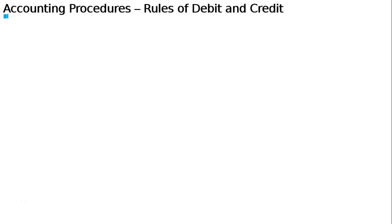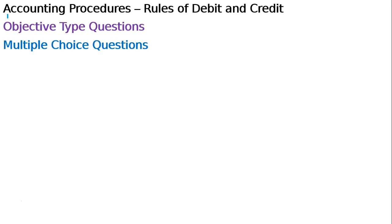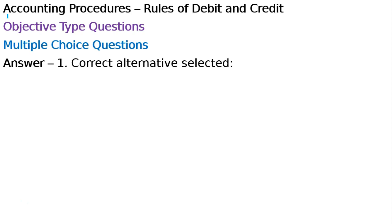Dear students, welcome to the classes of RAY Academy. We are studying double entry bookkeeping for standard 11th, financial accounting, and the chapter is accounting procedures — that is, rules of debit and credit. We are doing multiple choice questions. In this chapter we are doing objective type questions; the concept and the multiple choice questions are answer-based. The correct alternative is selected and I will tell you the answer with the question and the answer reason.